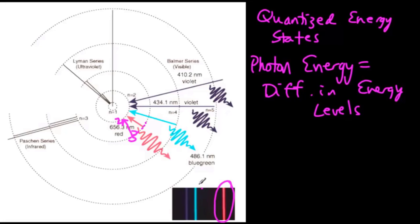Transitions from four to two would produce this color of light, and five to two would produce this color of light, and so on. It was only drops down to n equals two that produced visible light, and that's why there was a two in Rydberg's formula.